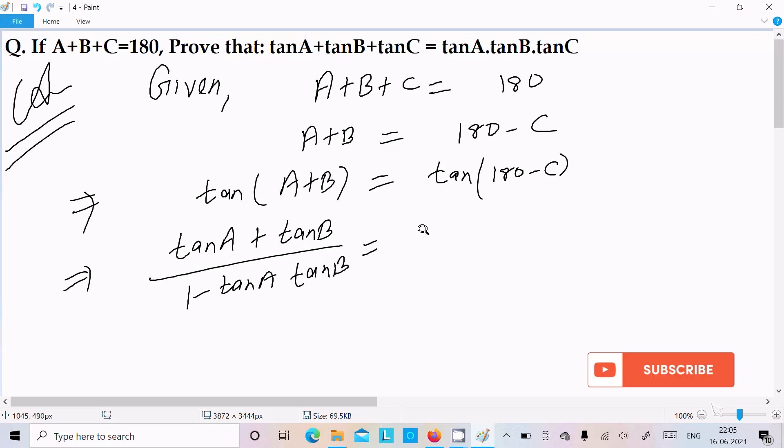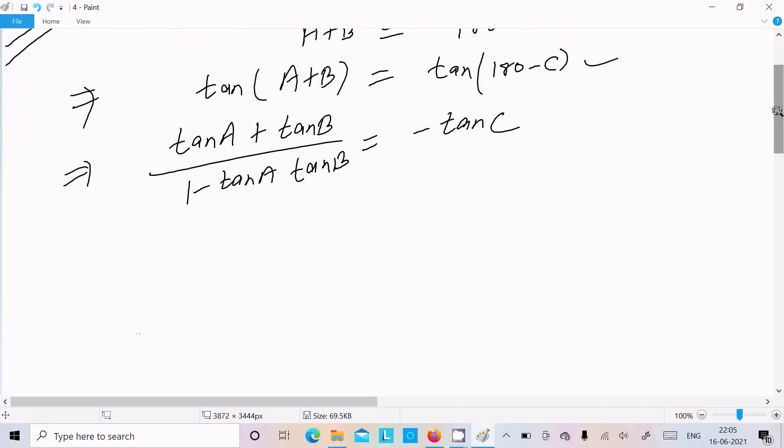Tan 180 minus C, that is minus tan C. This is the formula of tan 180 minus theta, that is minus tan theta, so you should know.